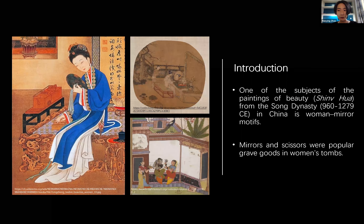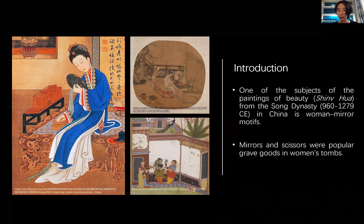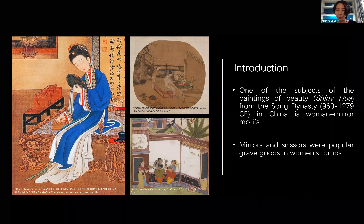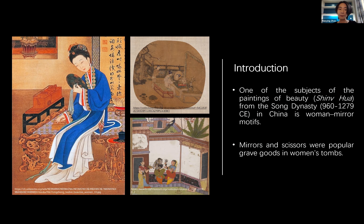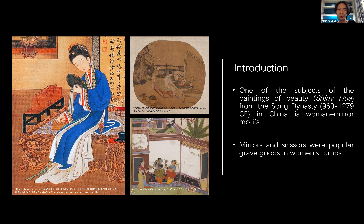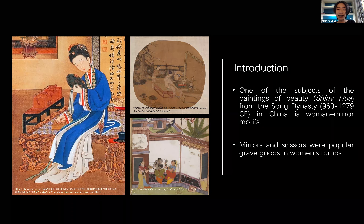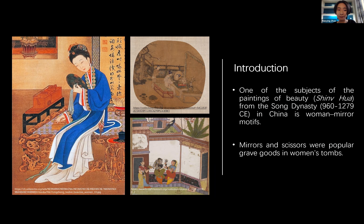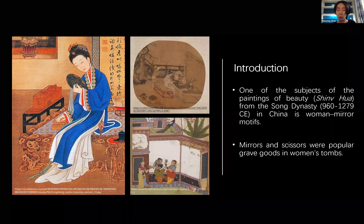I would like to begin my presentation with three brilliant paintings. My motivation for choosing this research topic is because of the beautiful paintings about women, called Shi Nu Hua in Chinese. From the Song Dynasty, the woman-and-mirror motif became popular, and we can sense some relationship between femininity and the mirror, but we don't know how or why it happened.